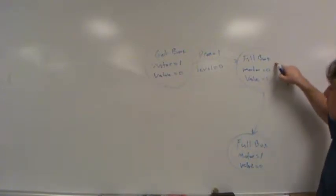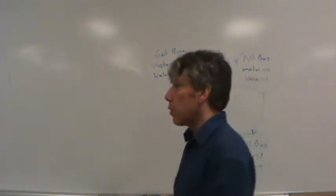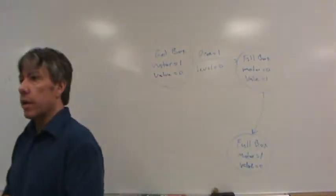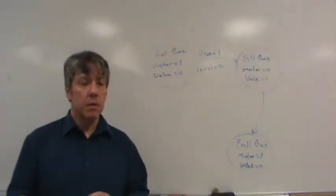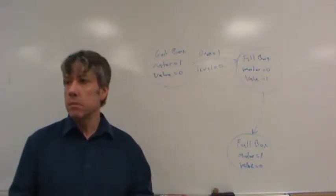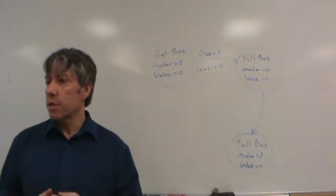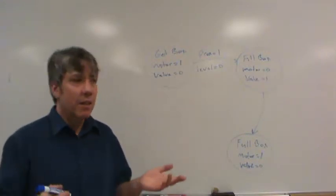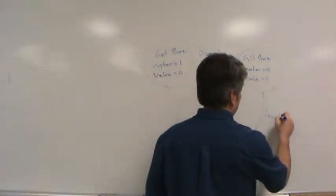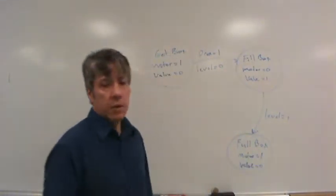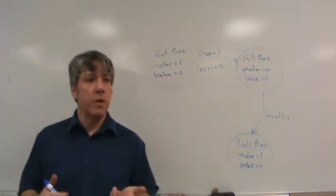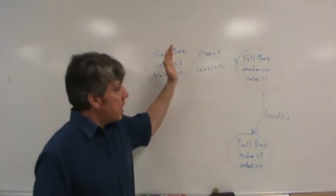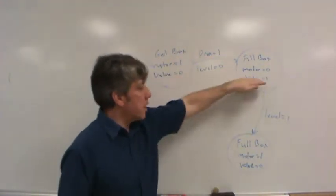Now, what does it take to go from fill box to full box? What input would be triggered that would go true or false to indicate that we no longer have an empty box, we now have a full box? It's an easy question. You guys know the answer. You're just tired, right? The level sensor. Level sensor. So level equals one. When level sensor goes true, then we need to go here to the full box. And so far, this is nothing more than a sequence, right? We're just going from state to state to state or step to step to step.